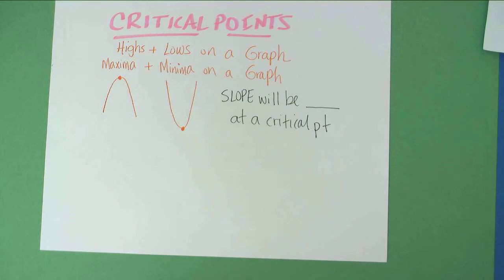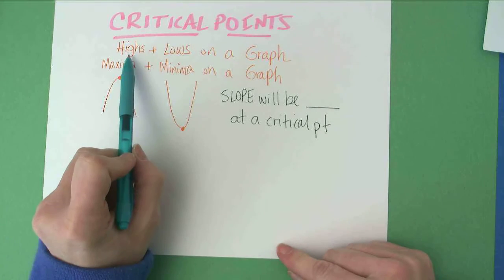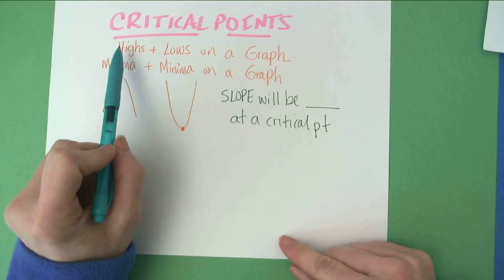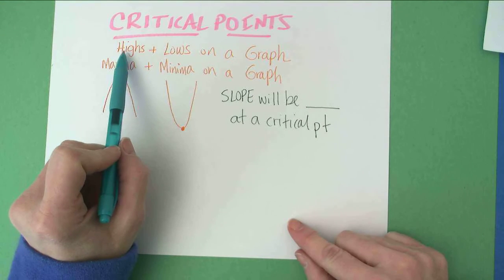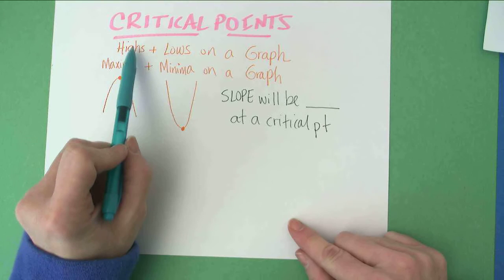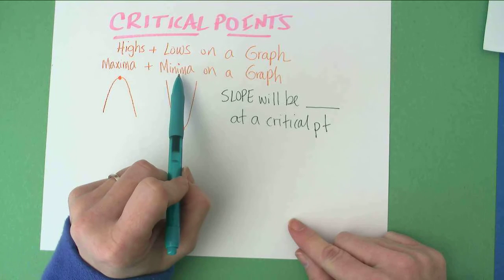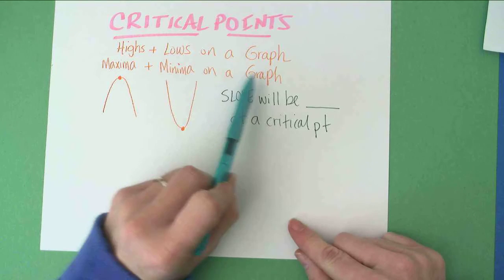A new term for you in calculus is going to be this word, critical points. Let's define it. Critical points are the highs and the lows on a graph. Getting a little fancier with our terminology, the highs on a graph we're going to call maxima, and the lows on the graph we're going to call minima.